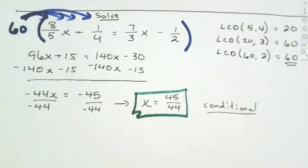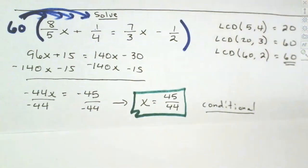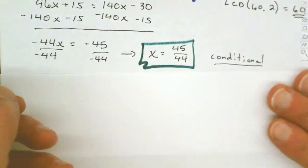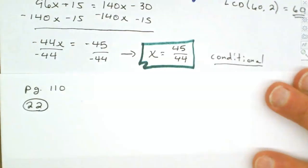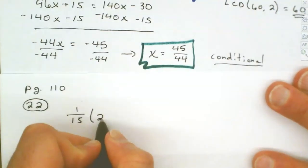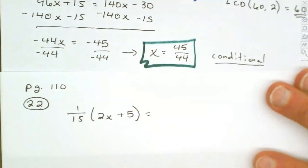Let's pull question 22 from page 110 of the textbook. This one has fractions and is a bit different. If you don't have your textbook, that's okay — I'll write it on the screen. This one has parentheses, so we deal with those first by distributing the fractions through.